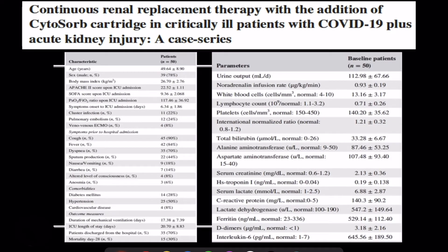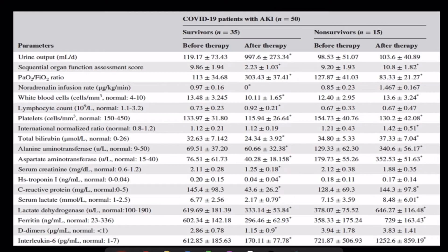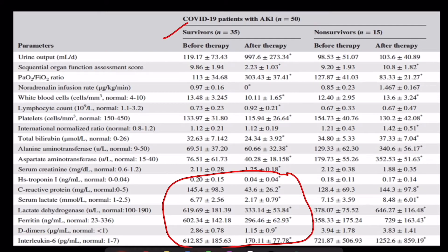Analyzing the data available so far: a case series of 50 patients showed a mortality rate of around 30%. The SOFA and APACHE scores were quite high, indicating a very sick group with severe to moderate ARDS, high norepinephrine requirements, and elevated cytokine levels. Dividing patients into survivors versus non-survivors, all cytokine-related parameters showed reduction in survivors, while in non-survivors most parameters remained elevated despite therapy.